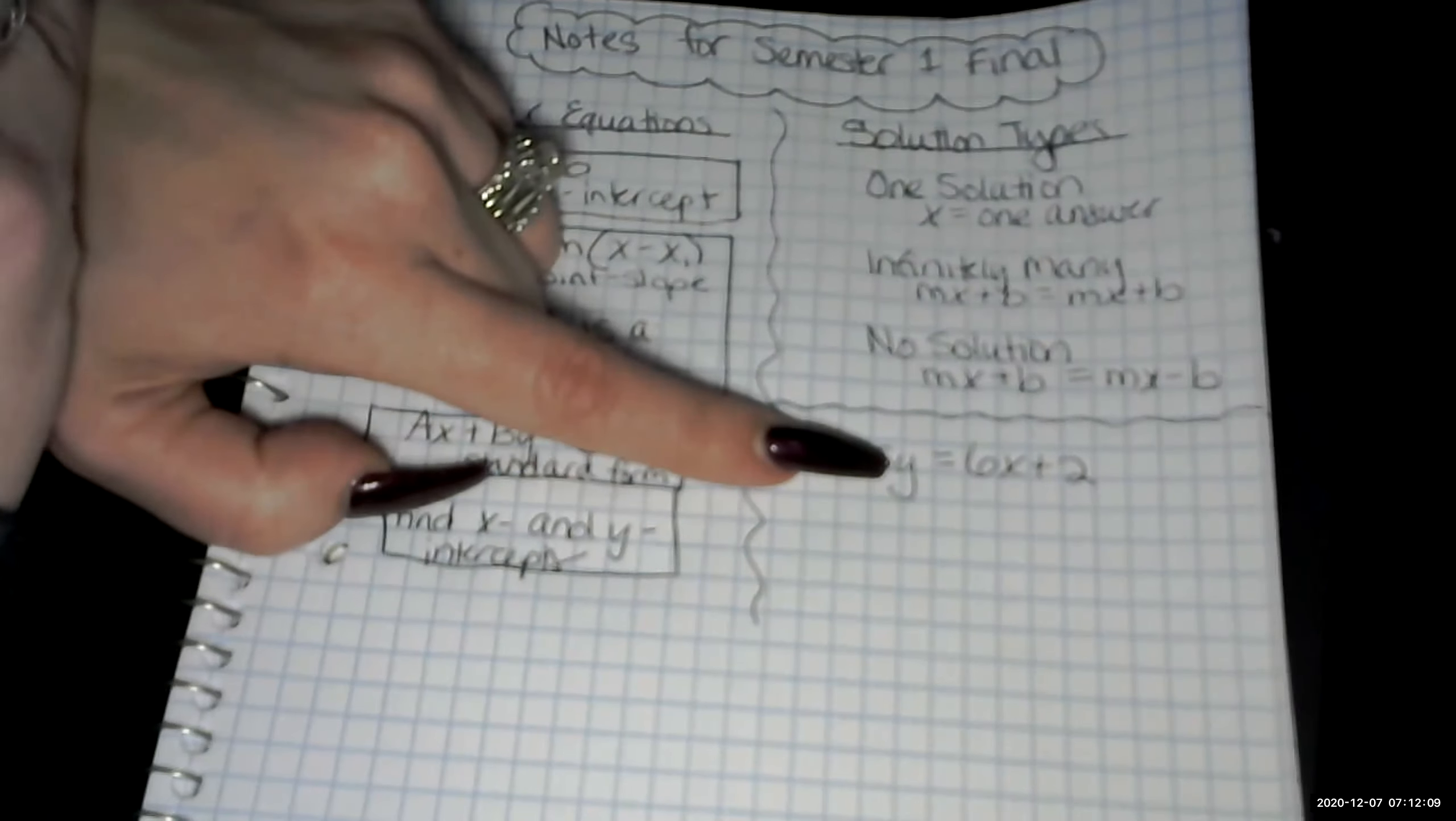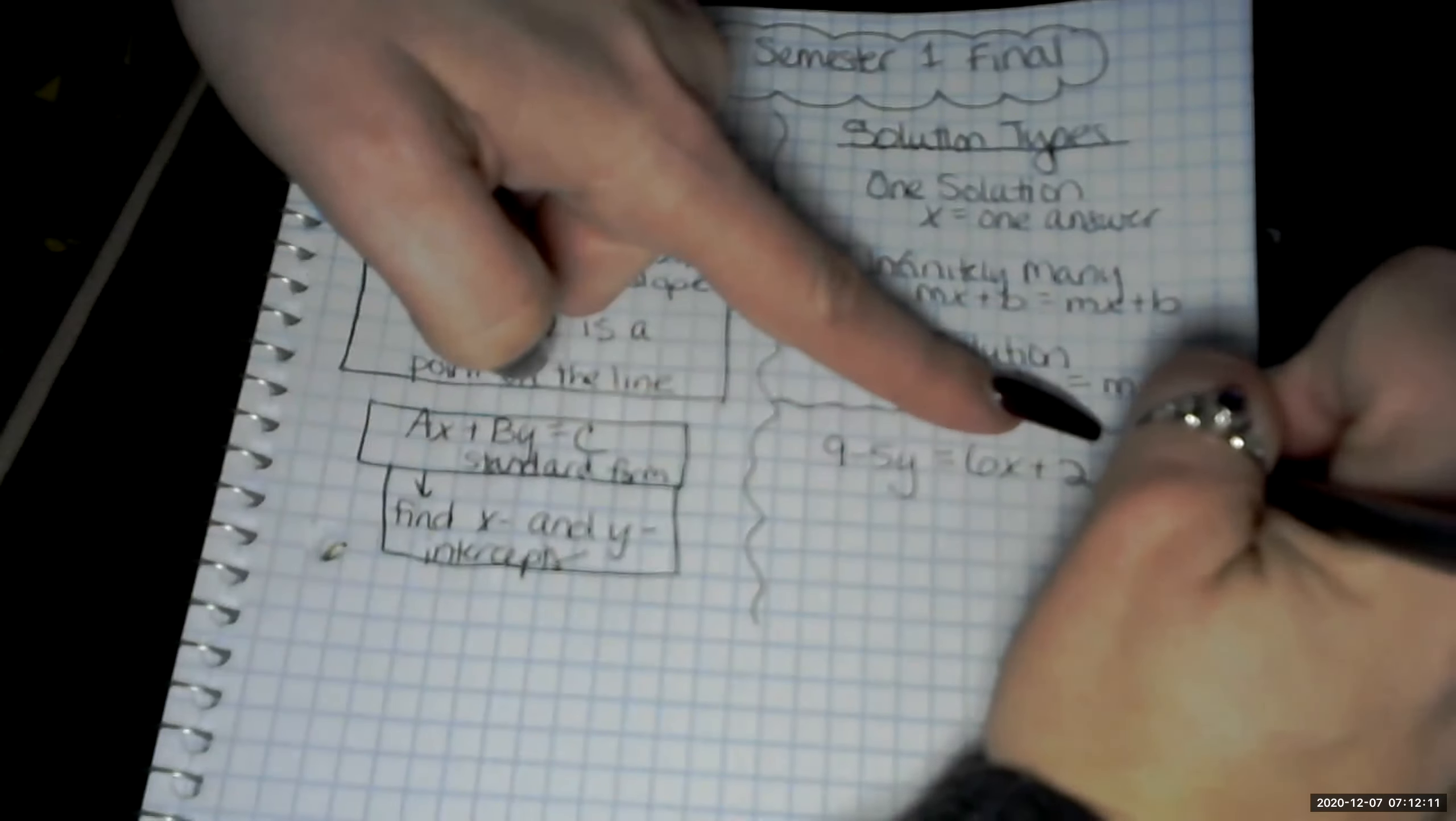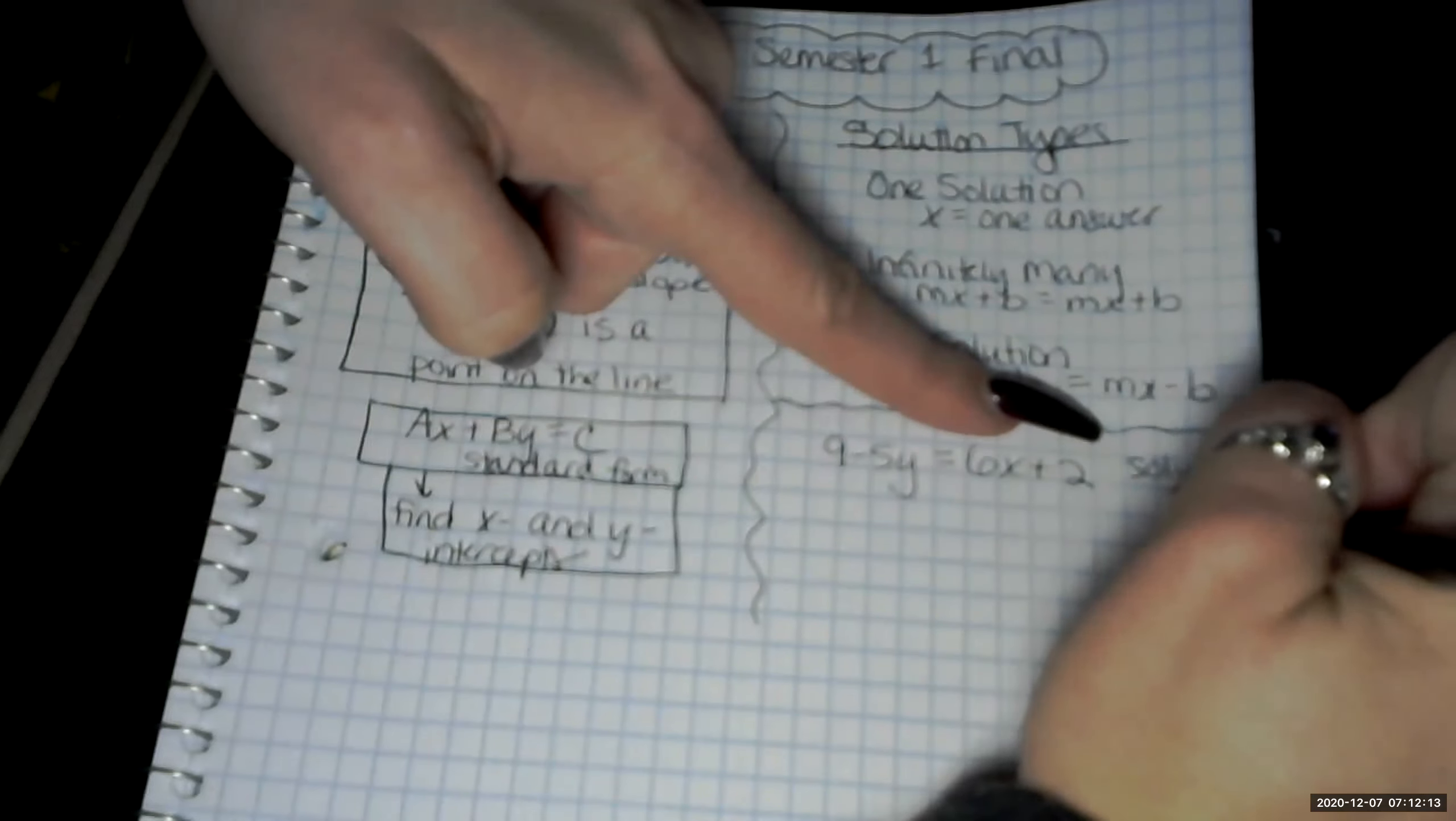So we had 9 minus 5y equals 6x plus 2. We're solving for y. So I'm off to the side, I'm going to put solve for y.